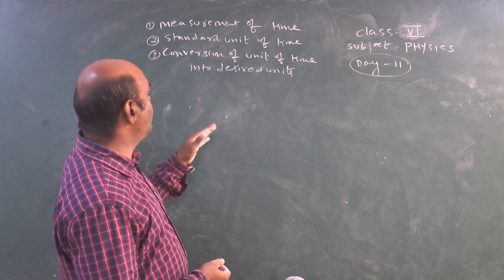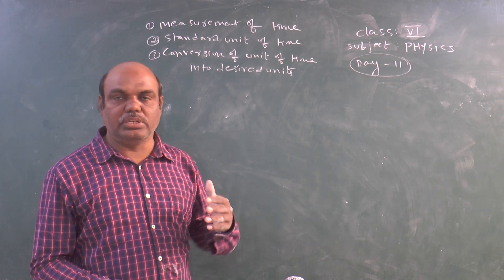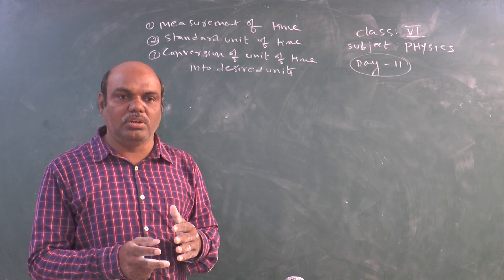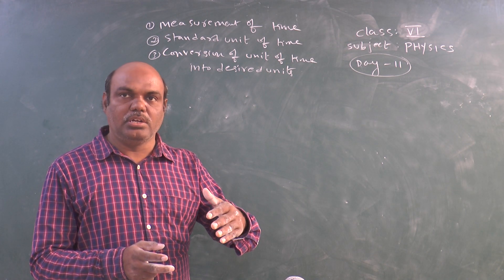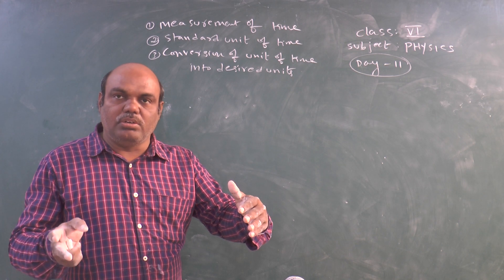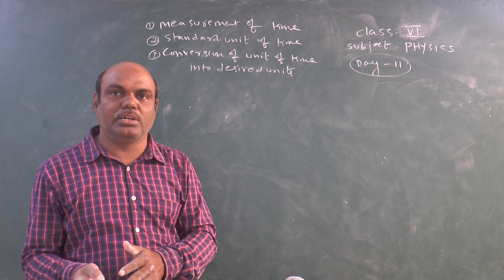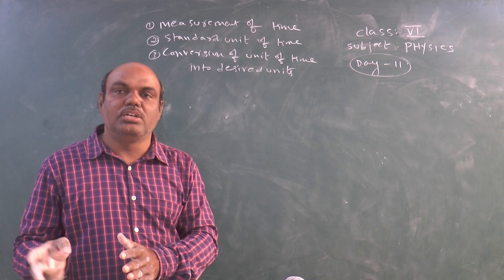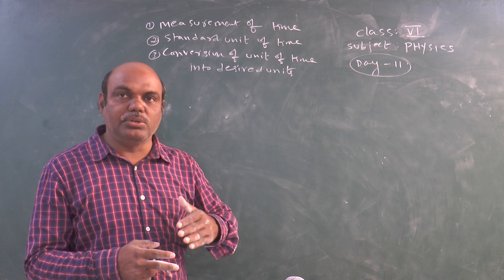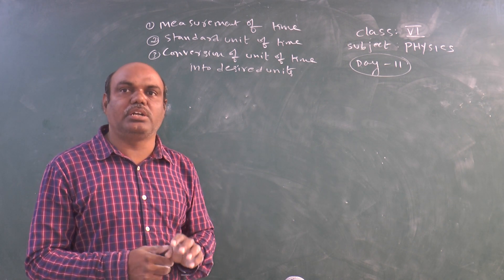Next, Conversion of Unit of Time into Desired Units. For example, a body travelled from one point to another point in 10 minutes. If you want to convert it into seconds, we take 10 into 60, which gives 600 seconds. Like that we can convert one unit of time into our desired unit of time.